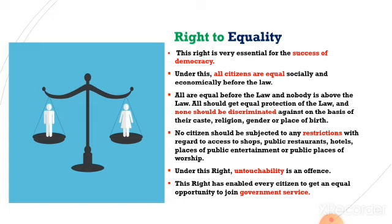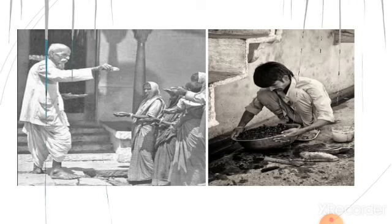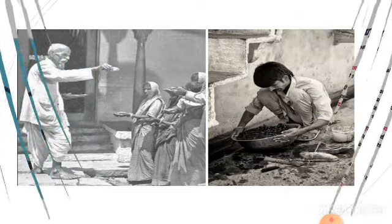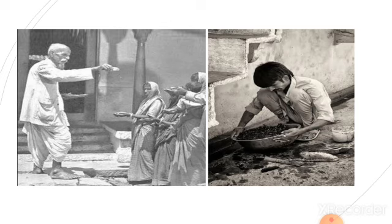No one is above the law; everyone should get equal protection of the law, and none should be discriminated against on the basis of their caste, religion, gender, or place of birth. According to right to equality, no citizen should be restricted from entering shops, public restaurants, hotels, places of entertainment like parks and theatres, or places of worship based on their caste, religion, or place of birth. Under this right, untouchability practice is an offense. Untouchability is an ancient practice in which lower class people had to maintain distance from higher class people. It is prohibited because it encourages inequality in society. This right has enabled every citizen to get equal opportunity to join government services.